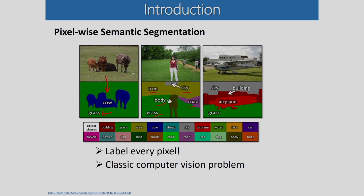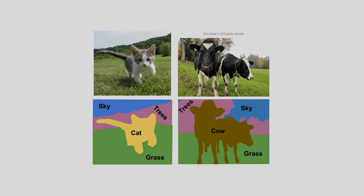For the third image you can also see labels like sky, building, airplane, and grass. So this is the labeling of the input image — the definition of semantic segmentation means we can label every pixel of the input image. It is a very popular computer vision problem. We will discuss semantic segmentation and how the convolutional neural network can be employed for it, using the UNET convolutional neural network architecture.